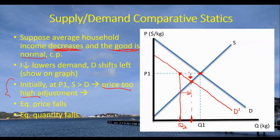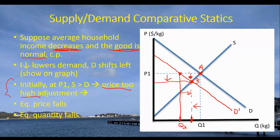The final effect: a decrease in household income reduces demand for coffee. The total impact is a drop in the price of coffee, moving from point A to point B, and a decrease in the quantity of coffee sold. Lower incomes reduce demand, and a reduction in demand lowers both the price and the quantity ultimately sold in the marketplace.